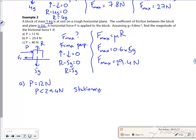So for B, if P is 29.4 newtons, my P is equal to F max. I guess I could have put here P is less than F max. Here my P is 29.4, so my P is F max.